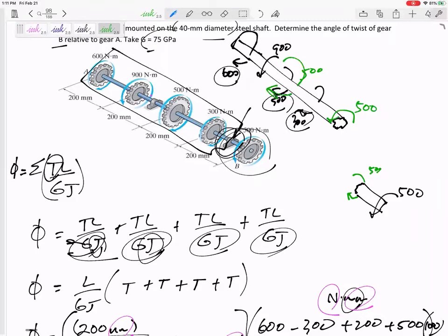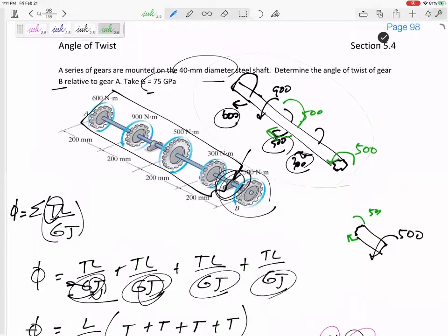So you need to cut it and ask yourself, what do I need at the cut? Sum the moments equal to zero. And then if your thumb is pointed out of the cut, then that would be positive. I think it's easier for me to visualize it when I can just see that cut right there. And so I think that one is easier for me to see at that cut.